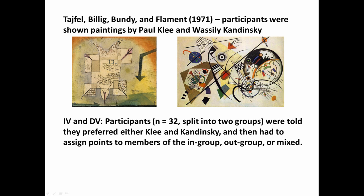Tajfel used experiments in which people were randomly assigned — sometimes English school kids, an eerie parallel to the Lord of the Flies. He assigned people randomly to one group or the other and then asked them to allocate resources or make preference ratings for people who were either in their group or in another group. In 1971, Tajfel, Billig, Bundy, and Flament published an article in which participants were shown paintings by either Paul Klee or Vasily Kandinsky — two images that are similar in modern art style.